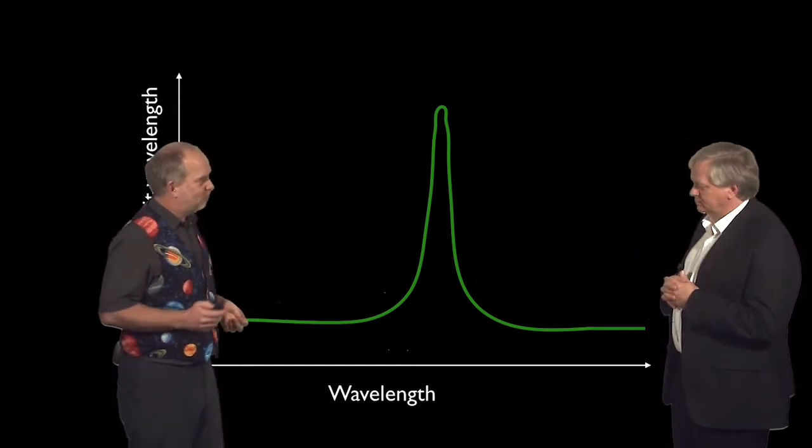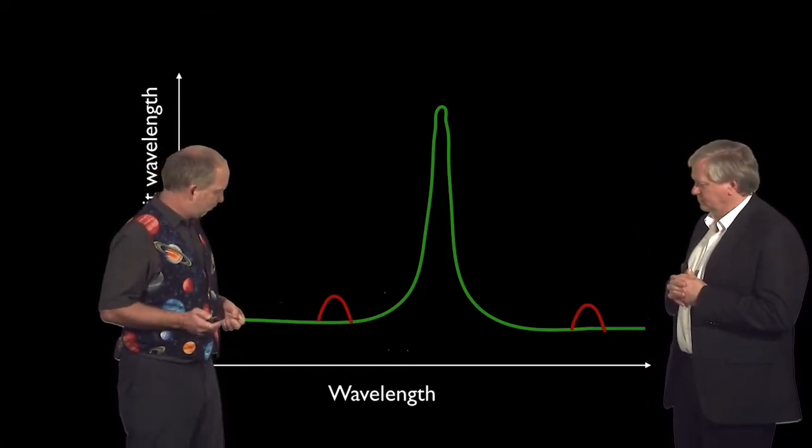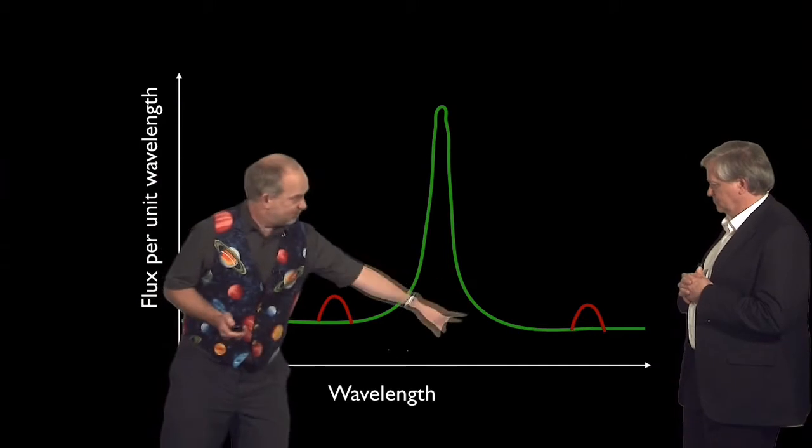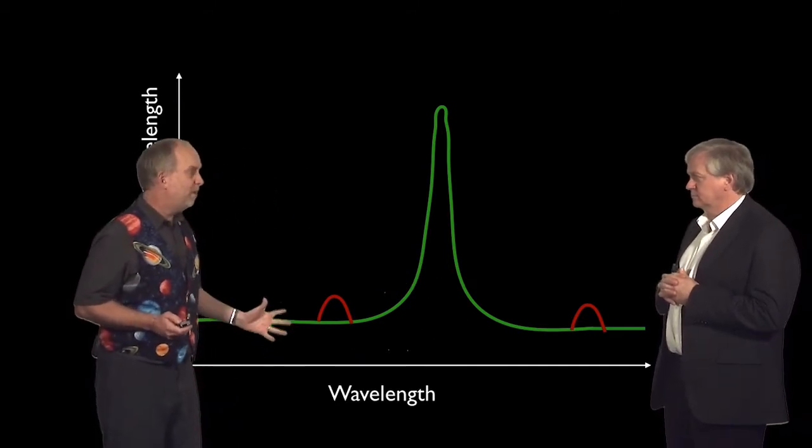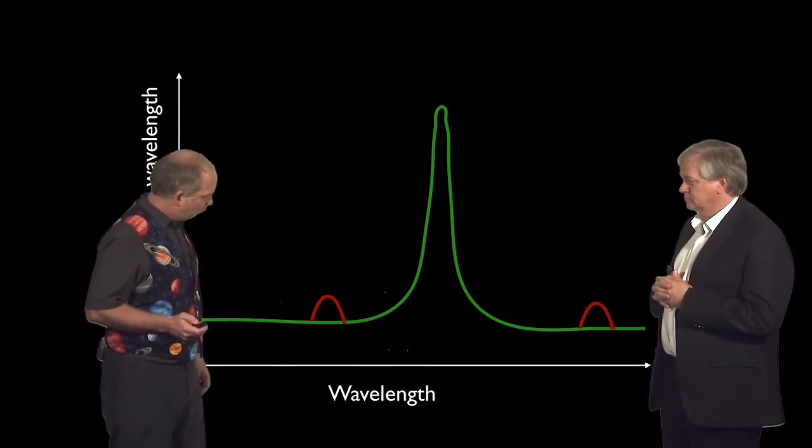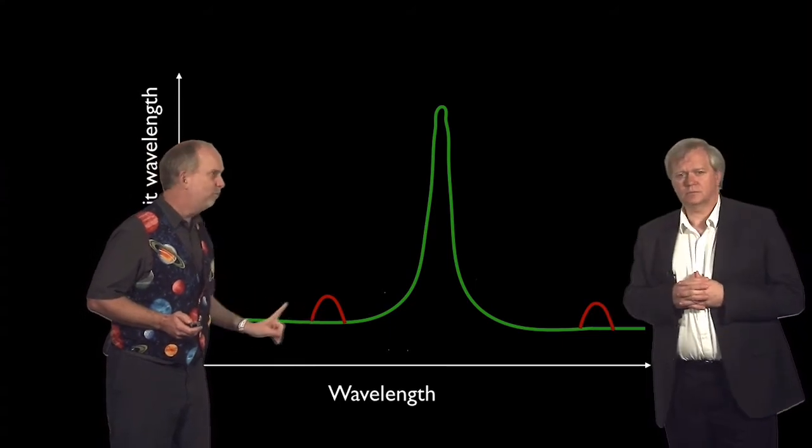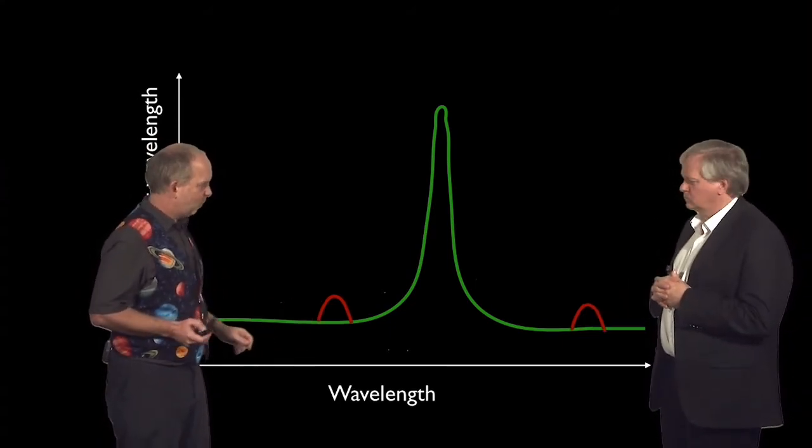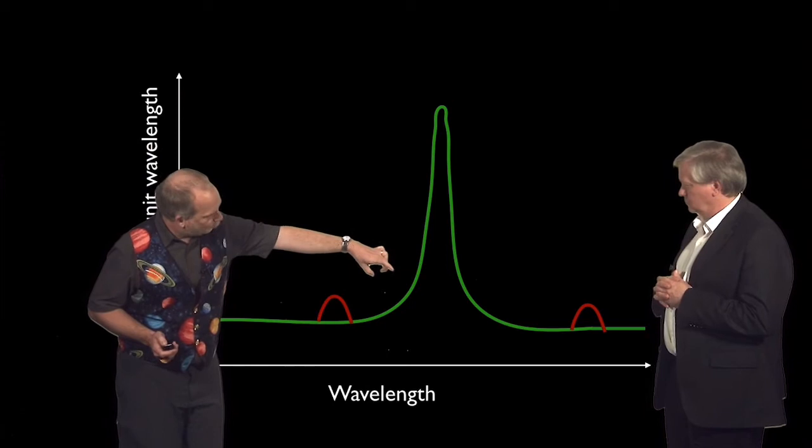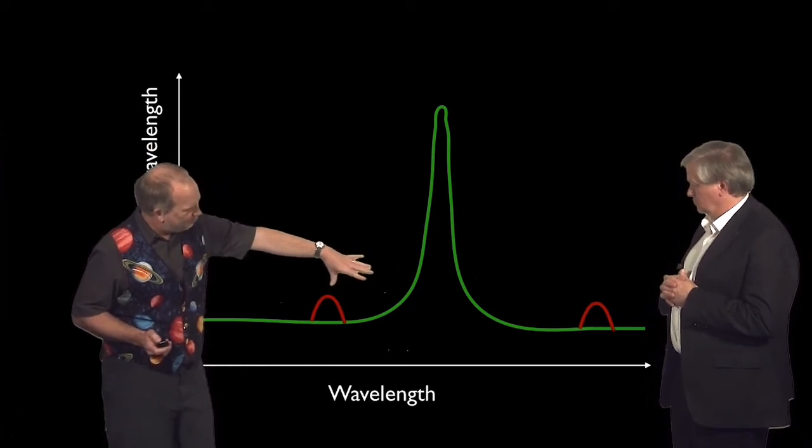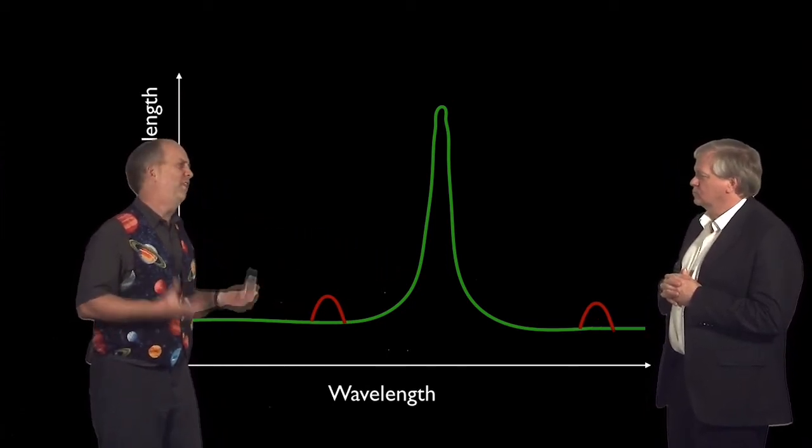However, when more observations were made, this time in California, people discovered that, first of all, there were two of these things, but they also came and went. They came back, and they moved around. So they'd actually moved backwards and forwards in wavelength in a symmetrical way. You see they'd go both closer towards the line and both further away from it. Oh. Now, what could cause that?